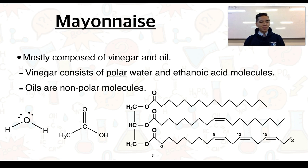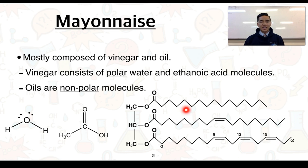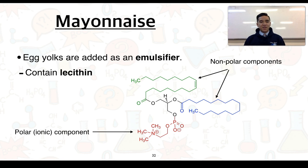Mayonnaise is an example — it's mostly composed of vinegar and oil. Vinegar consists of polar water and ethanoic acid molecules, while oils are generally classified as non-polar molecules. A triglyceride, for example, has a large section made up of only carbons and hydrogens — a non-polar component — making the overall molecule non-polar. To allow vinegar and oil to mix, we add egg yolks as an emulsifier. Egg yolks contain lecithin, which is made up of both polar and non-polar components.